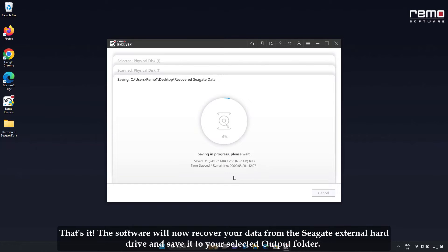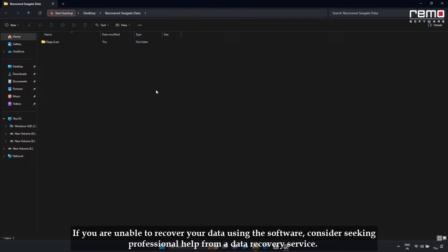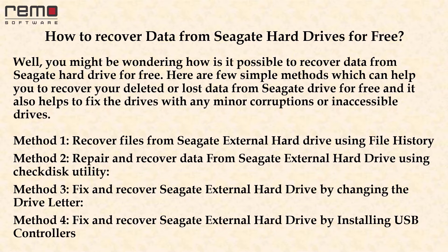That's it. The software will now recover your data from the Seagate external hard drive and save it to your selected output folder. If you are unable to recover your data using the software, consider seeking professional help from a data recovery service. You might be wondering how it is possible to recover data from Seagate hard drives for free. Here are a few simple methods which can help you recover deleted or lost data for free, and also help fix drives with minor corruptions or inaccessible drives.